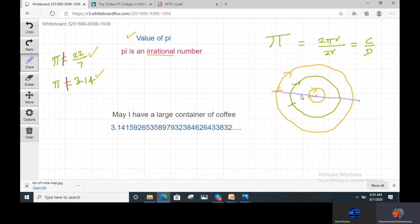Because when you take a big circle, that Pi value differs. Then how to remember the Pi values? So whenever you take a big value, you can remember the Pi values easily. For that, I can give you a technique. May I have a large container of coffee. That is the technique.